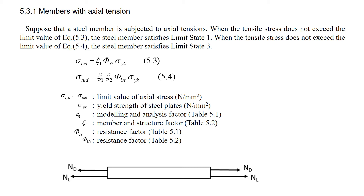Section 5.3.1: Members with Axial Tension. Let me explain how to verify the tensile members. Suppose a steel member is subjected to axial tensions Nd and Nl. When the tensile stress does not exceed the limit value of equation 5.3, the steel member satisfies Limit State 1. When the tensile stress does not exceed the limit value of equation 5.4, the steel member satisfies Limit State 3.